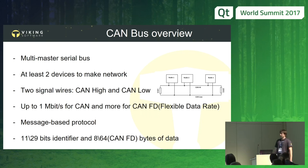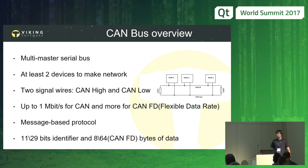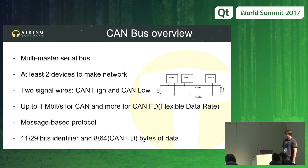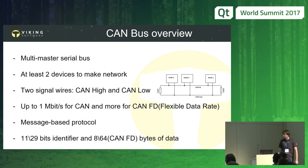Every frame has several important fields. The identifier can be 11 or 29 bits long, depending on the version. There is also the frame type — it can be a data frame, remote request, overload, or error. And there is payload: for standard CAN it's limited to 8 bytes, and for CAN FD it's up to 64 bytes.